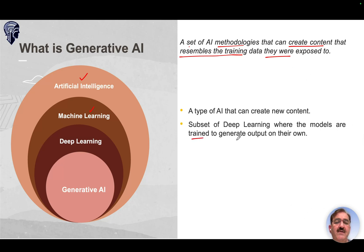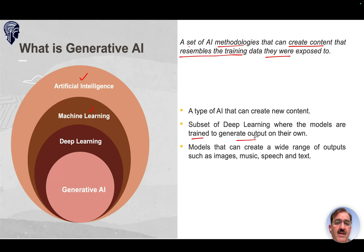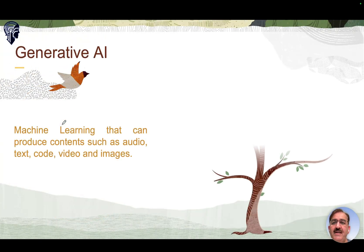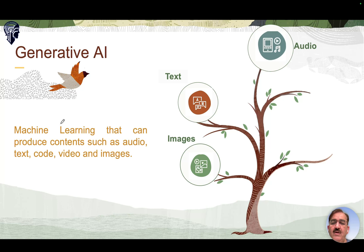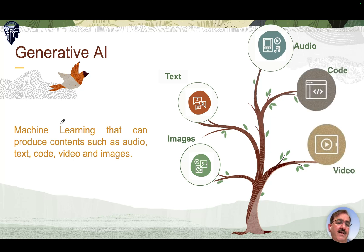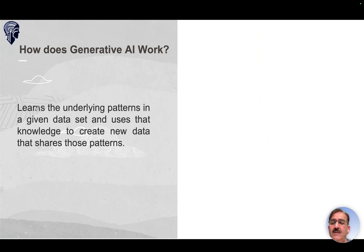It's a type of AI where models are trained to generate output on their own based on a prompt. The model can create a wide range of outputs like images, music, speech, text, and even video. So Generative AI is machine learning that can produce content such as audio, text, images, code, and other types of data.